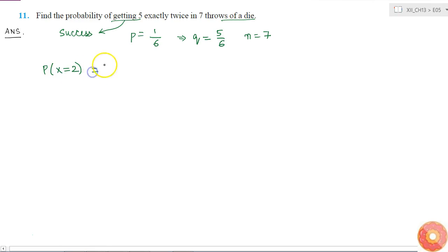This is equal to 7C2 into p power 2 into q power 7 minus 2. Because this is an example of Bernoulli trials, I can use the binomial distribution.